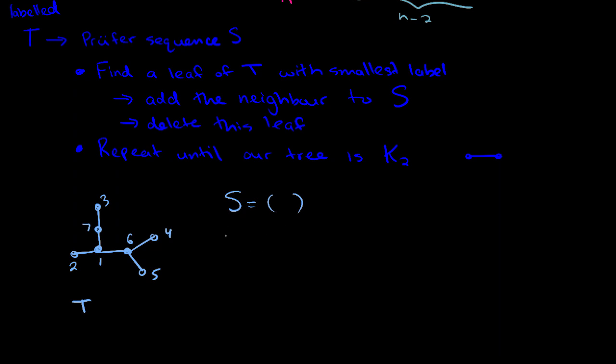Now, step number one, find a leaf which has the smallest label. So maybe I'll use red for that at the moment. You might be tempted to say, oh, the smallest label is one, so it's this guy right here. That's not true because you have to find a leaf with the smallest label. So you look through all the leaves and you have a two, three, four, and five. So clearly two is the guy with smallest label. And what you're going to do is you're going to delete two from the tree, and you're going to add one into this Prüfer sequence. So we have S is equal to just one at the moment. And now we consider our new tree.